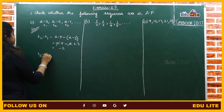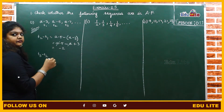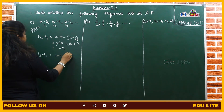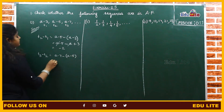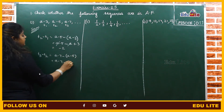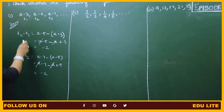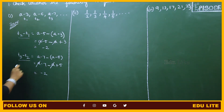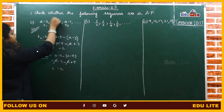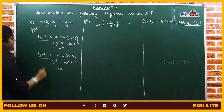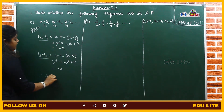Next we check T3 minus T2: A minus 7 minus T2 value which is A minus 5, giving A minus 7 minus A plus 5. A and A cancel, so minus 7 plus 5 is minus 2. Since T2 minus T1 and T3 minus T2 are both minus 2, the common difference is constant. Therefore, the above sequence is an AP.